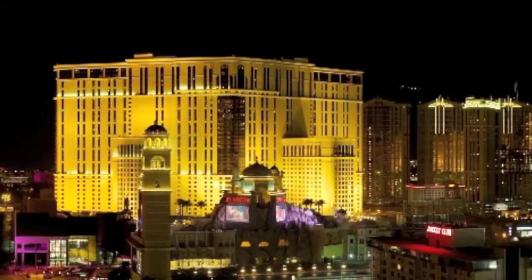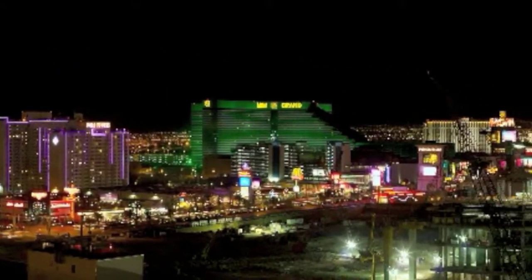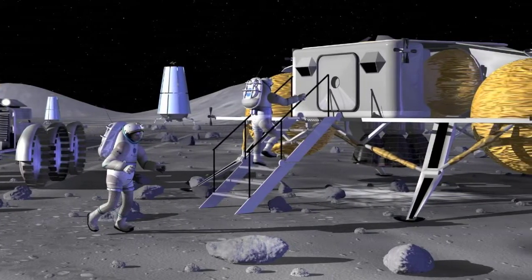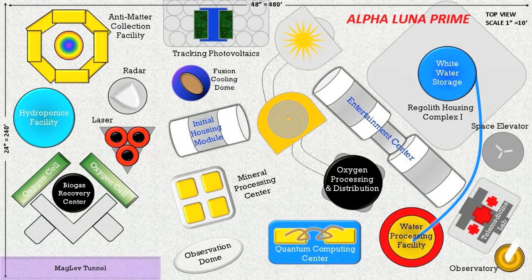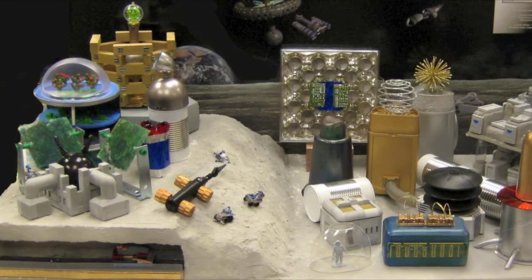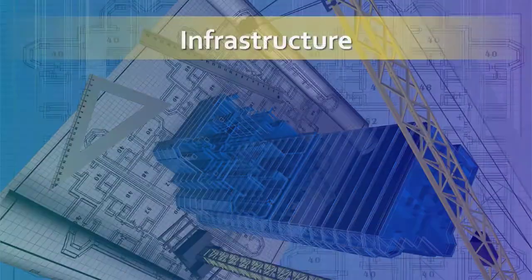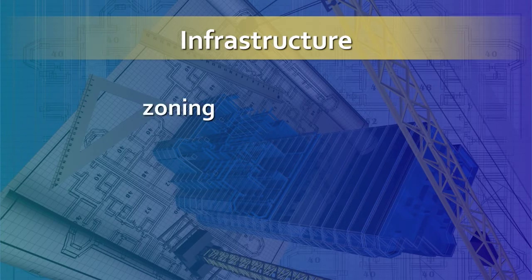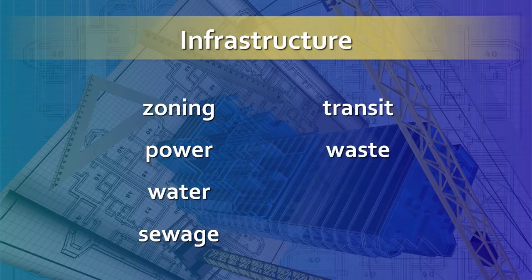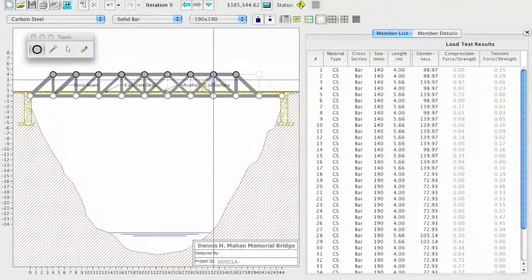Cities are complex systems — so complex it's hard to fathom what it takes to build and maintain them. But that's just what architects, engineers, and city planners do every day for cities right here on Earth, like Las Vegas, and cities that someday may be developed extraterrestrially, like a moon colony. Before any building occurs, designers — whether professionals or students — create scale drawings and scale models to plan construction and visualize the finished product. Laying out city infrastructure includes the proper placement of city zones, power production and distribution, water access and distribution, sewage, transit, waste management, and telecommunications.